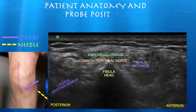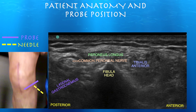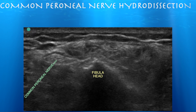We can see the common peroneal nerve just posterior to the fibula. The peroneus longus muscle is just lateral to the fibula head, and tibialis anterior is anterior to the fibula head.